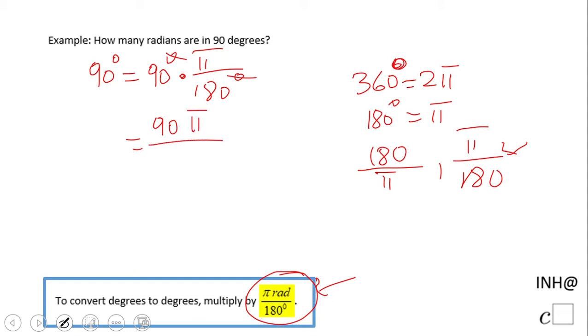And we have simple math: 90π over 180, which is π over 2. Of course, this problem can be done using proportion if you want.